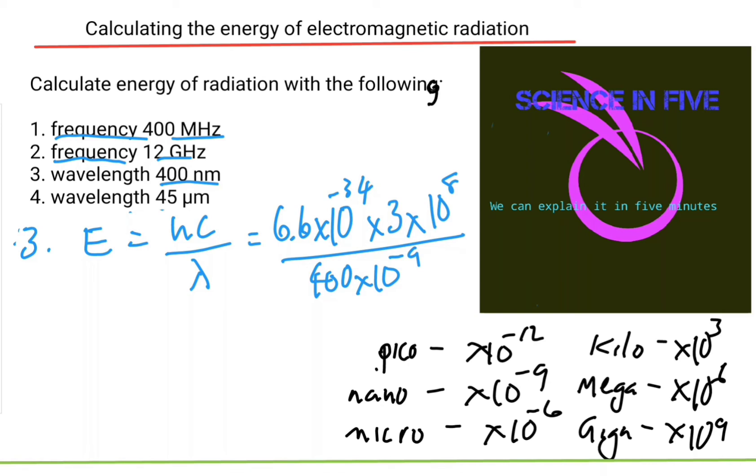And the answer that I'm getting here is 4.95 times 10 to the negative 19 joules.